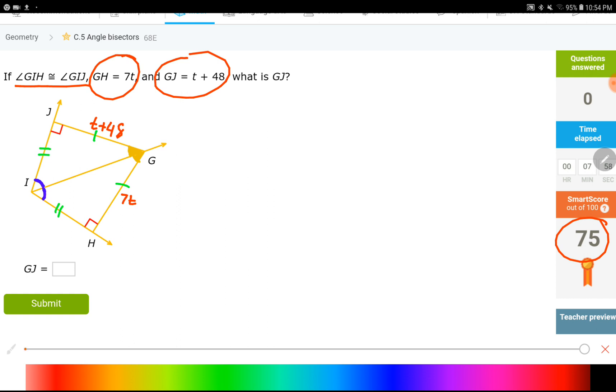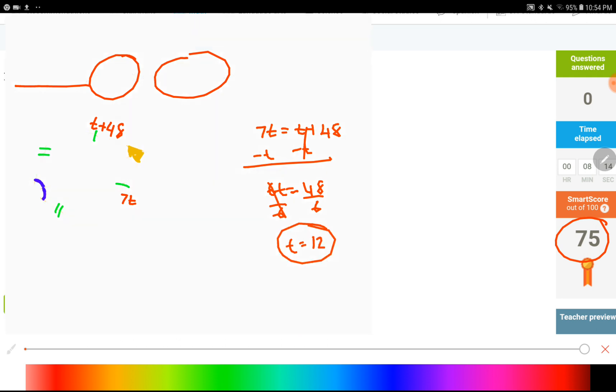But for our question, we said 70 and T plus 48 equals to each other, subtract one T from both sides. So, 60 equals 48, divide each side by 6, and then you'll get T equals 12.